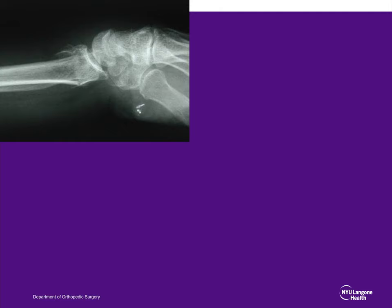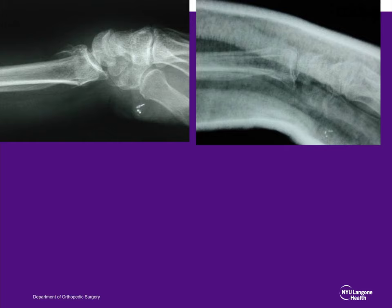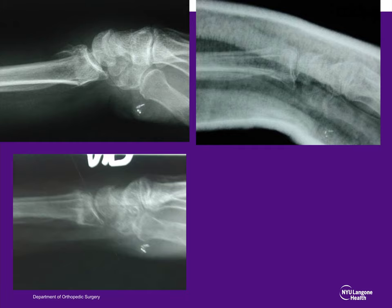Metaphyseal comminution is an important factor. Dorsal comminution extending more than 50% of the way down has a high probability of predicting re-displacement and dorsal tilt. Here is an x-ray demonstrating a high degree of dorsal comminution with dorsal tilt. Even though a cast was applied correctly with good palmar flexion and a good fit, re-displacement to the original injury occurred.